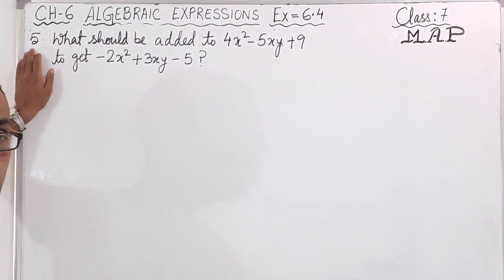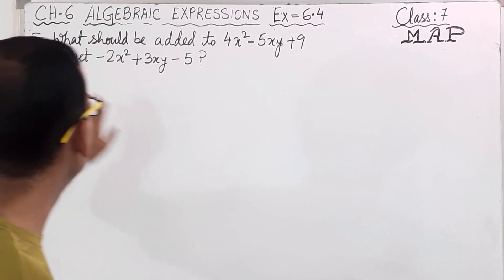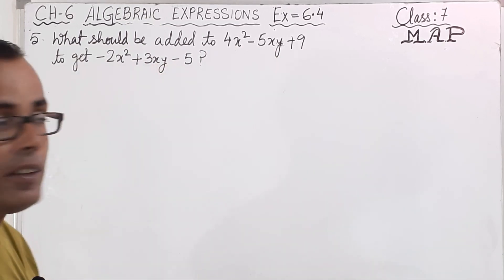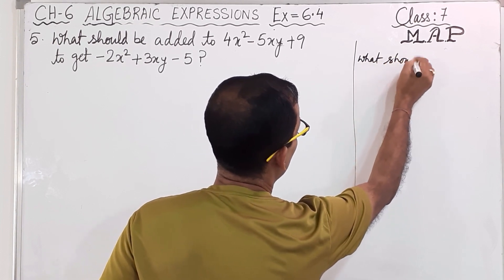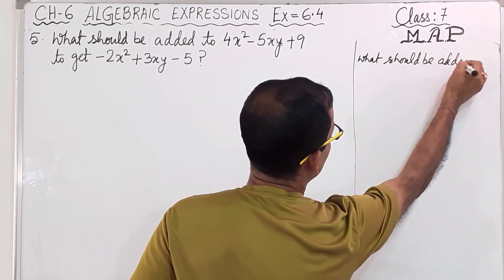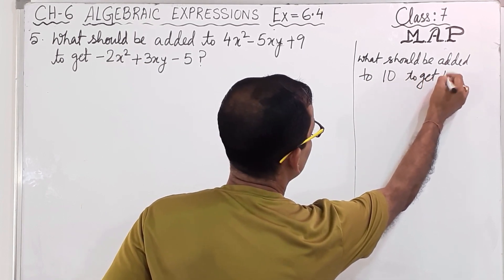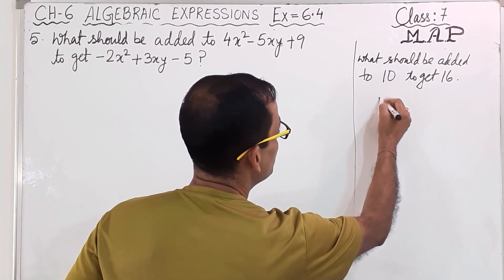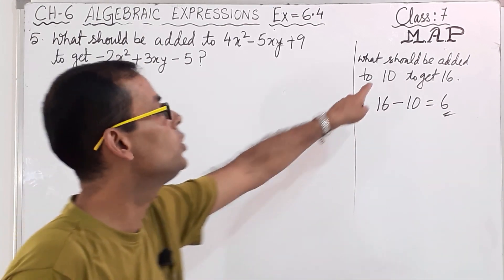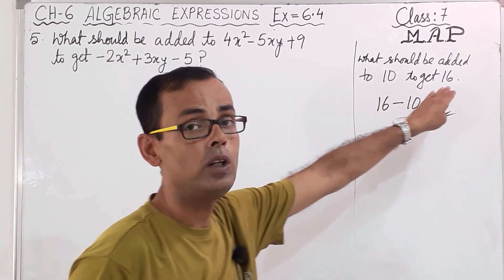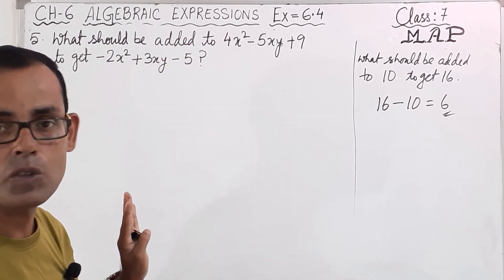Now we will solve Question Number 5. What should be added to 4x squared minus 5xy plus 9 to get minus 2x squared plus 3x minus 5? To understand this type of sum: if I ask what should be added to 10 to get 16, you do 16 minus 10, which equals 6. So you need 6 to be added to 10. So from this you learn that the second one minus the first one gives you the answer. Here also the same thing: second minus first, and you will get the answer.